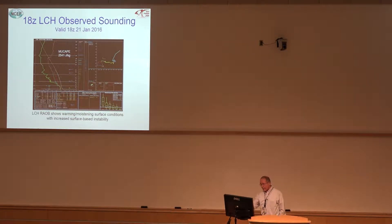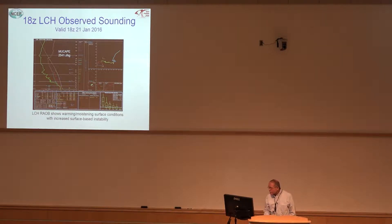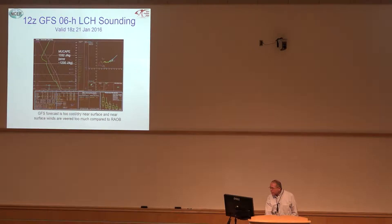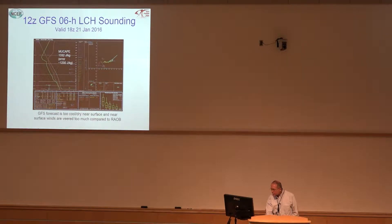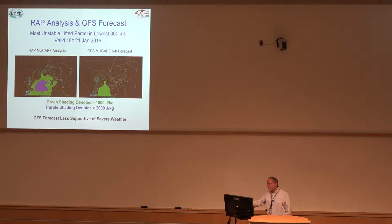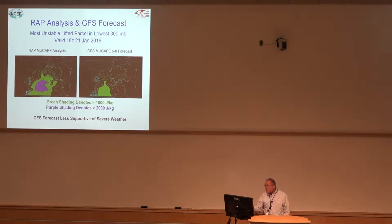What about six hours out? We had special soundings that day. The 18Z sounding from Lake Charles shows over 2500 joules of MUCAPE. The GFS forecast comparison shows it's not warm enough and not moist enough near the ground — it cools it off and shows about 1300 joules, so it's too low by about 1200 joules in just six hours. At 18Z, the GFS MUCAPE forecast on the right versus the RAP analysis on the left shows we're missing a lot of instability. The GFS wouldn't be nearly as supportive of severe weather even in the first six hours of the forecast.